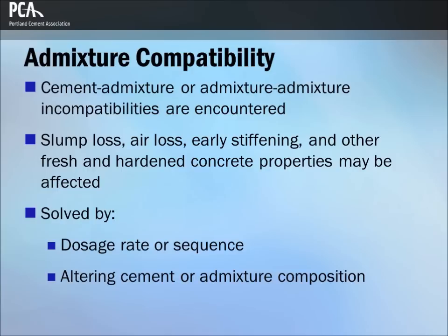Fresh concrete problems of varying degrees of severity are encountered as a result of cement-admixture incompatibility and incompatibility between admixtures. Incompatibility between supplementary cementing materials and admixtures or cements can also occur. Slump loss, air loss, early stiffness, and other factors affecting fresh concrete properties can result from incompatibilities. While these problems primarily affect the plastic state performance of concrete, long-term hardened concrete performance may also be adversely affected. When incompatibility is encountered, it can often be solved by changing the admixture dosage rate or the sequence of addition to the mixture.